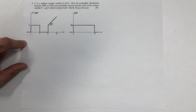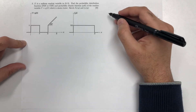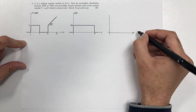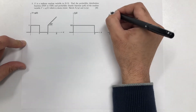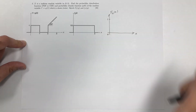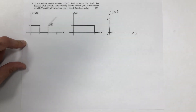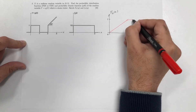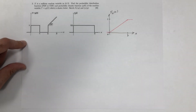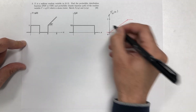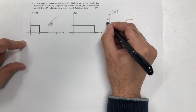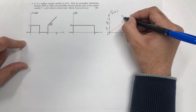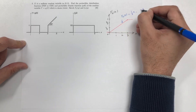From the statement of the problem we can figure out the distribution function of x. Because x is uniform, the distribution function will be a linear function. It should be linear between 0 and 3, equal to 1 at x equals 3, and then stays at 1. The equation of this distribution function is F_x(x) = (1/3)x for x between 0 and 3.